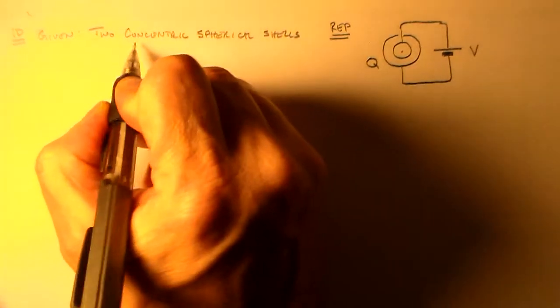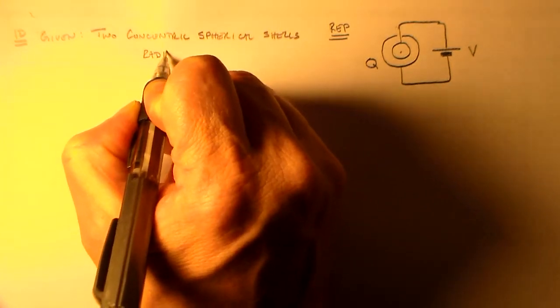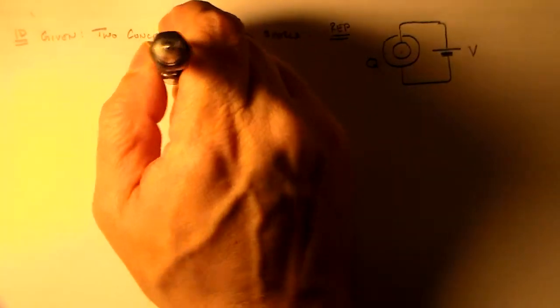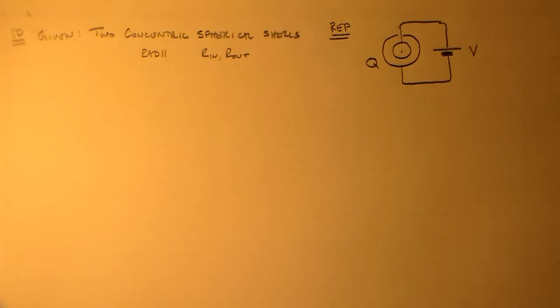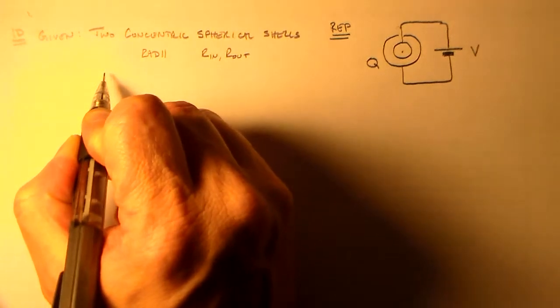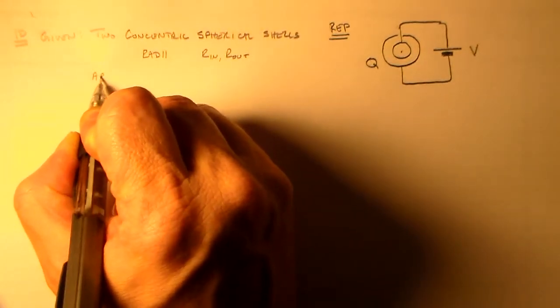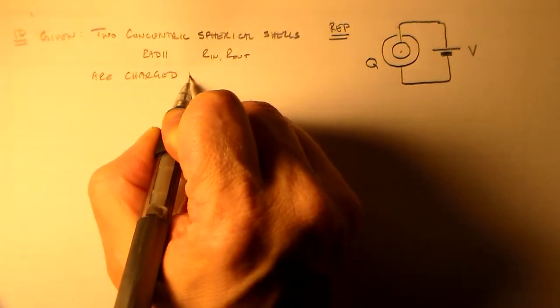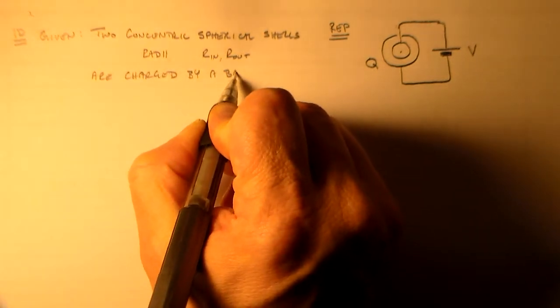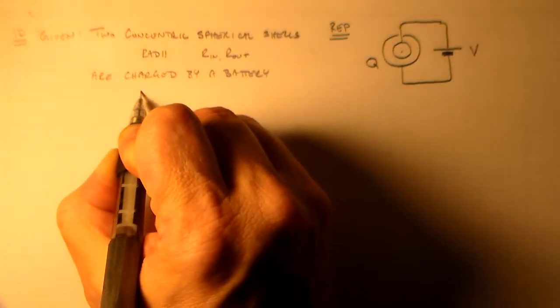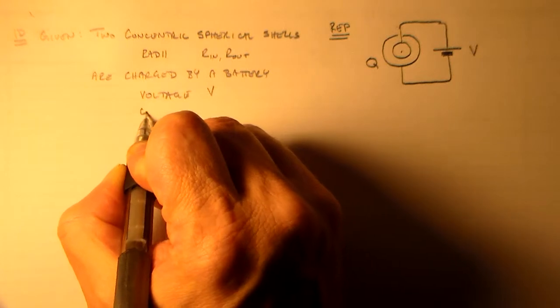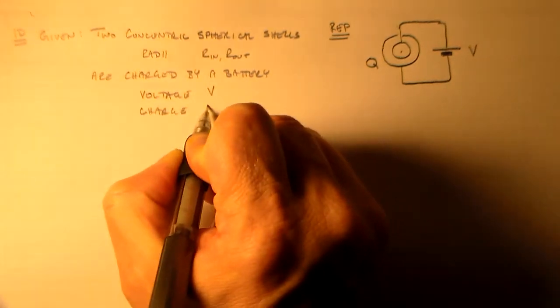So that's exactly what we want to write in our identification part of the problem. We have given two concentric, meaning they have the same center, spherical shells. Okay, and so they have radii, we can call them r_in and r_out, that's what we'll do this time, and then we're going to charge them up and find the capacitance, so they are charged by a battery. Okay, so the battery has a voltage of E, and they're charged to plus or minus Q.